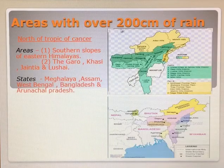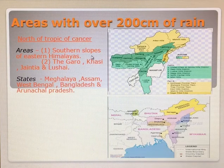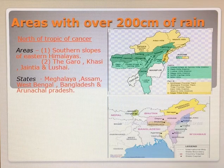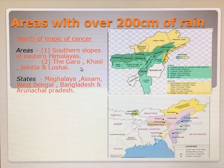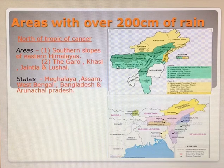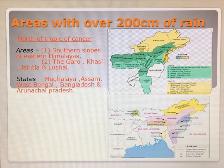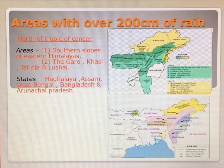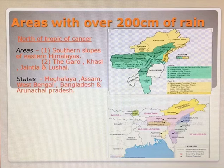Areas with over 200 cm of rain — first we will talk about the northern part of our country, which is above the Tropic of Cancer. Areas like the southern slopes of the eastern Himalayas, the Garo, Khasi, Jaintia, and Lusai Hills. This particular part is the southern slope of the eastern Himalayas, which faces towards the equator, and it rains heavily in these parts of our country.